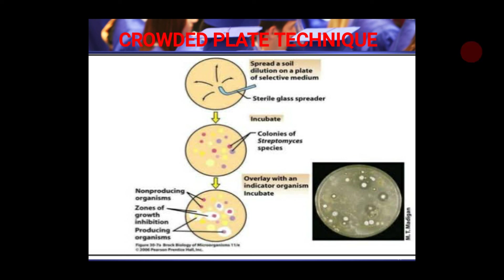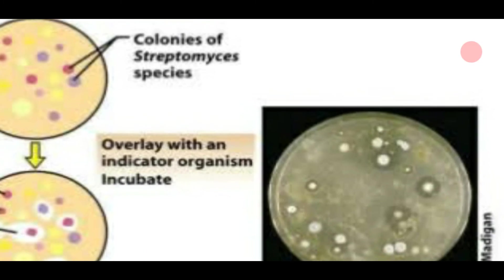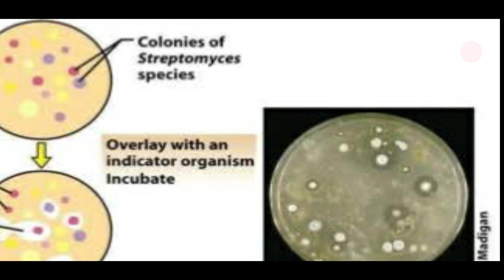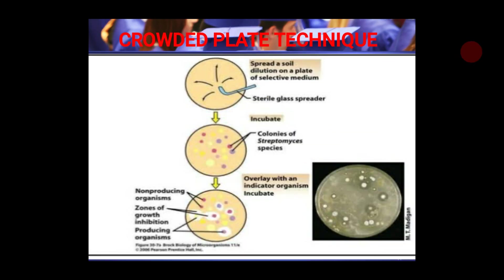After plating, observe the plates to locate any colony surrounded by a clear zone. As you can see in the diagram, among different organisms there will be some colony with a clear zone. This clear zone results from diffusion of chemical compounds — most probably an antibiotic — that kills organisms in the vicinity. Select that particular colony, pick it up, and subculture it. It is then essential to screen it further, as the zone may be due to an antibiotic or other inhibitory components.